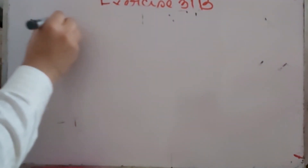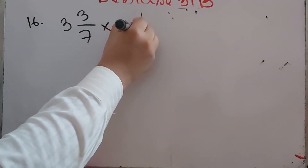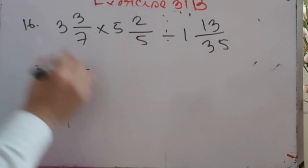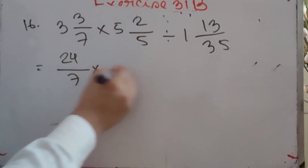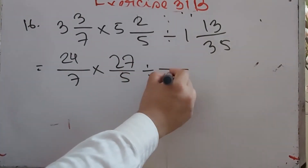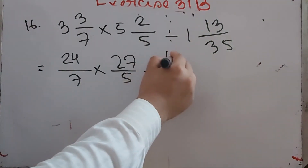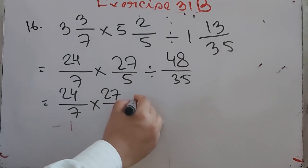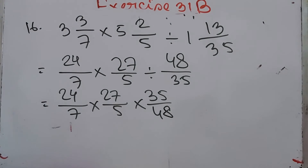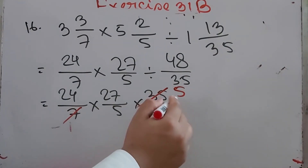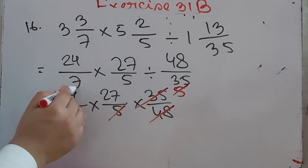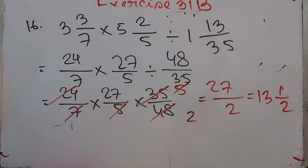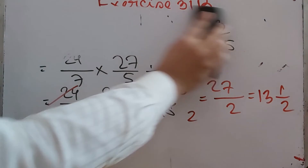Number 16: 3 whole 3/7 times 5 whole 2/5 divided by 1 whole 13/35. Convert: 7×3 = 21 plus 3 = 24/7; 5×5 = 25 plus 2 = 27/5; 35×1 = 35 plus 13 = 48/35. Multiply 24/7 × 27/5 × 35/48. Divide 35 by 7 = 5, divide 5 by 5 = 1, divide 48 by 24 = 2. Answer is 27/2 = 13 whole 1/2.